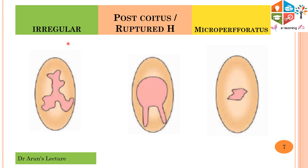In the case of an irregular type of hymen, we cannot make out a regular shape and there is no regular pattern. The other type is the post-coital or ruptured hymen. This is one differential diagnosis for the fimbriated type of hymen. A distinguishing feature is that in post-coital hymen, the tears reach up to the peripheral margin. In upcoming slides we will see the difference between post-coital hymen and fimbriated hymen.